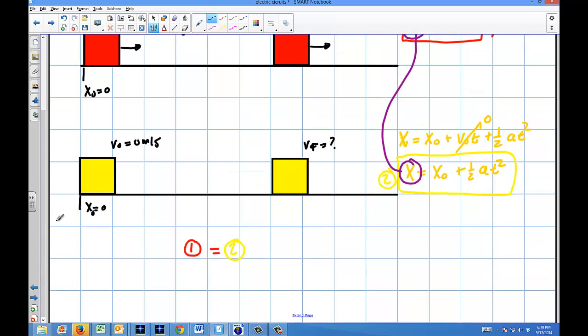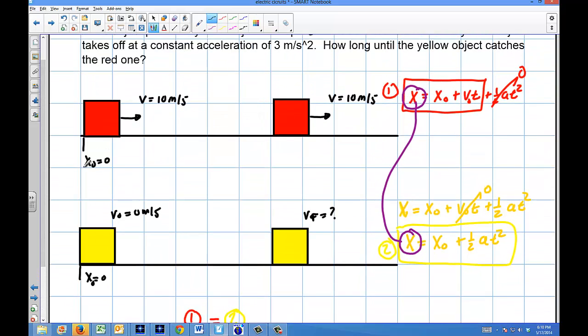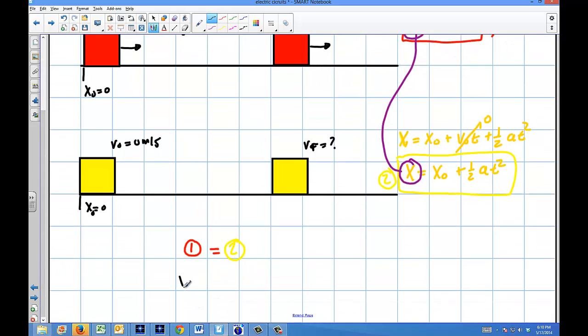So equation one basically said, X0 equals X0 plus V zero T. And the second one is going to be X0 plus 1/2 AT squared. And we knew that that X0, they both started at zero. So those terms actually go away.